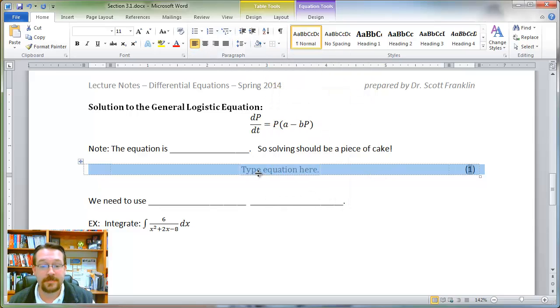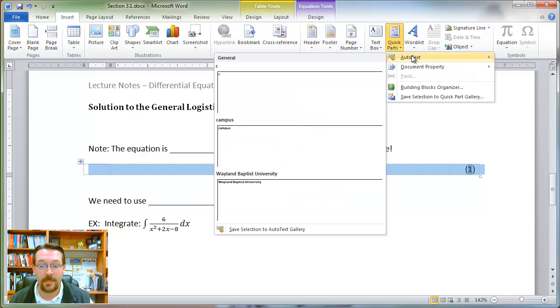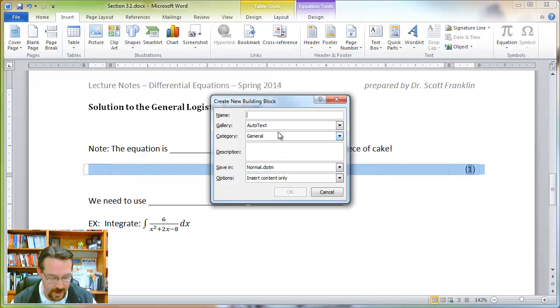Now I've got a basic text that I would like to insert multiple times in my document, so I would actually prefer to add this as a quick part auto text. This way I can repeat this process without having to go through it every single time by just creating an auto text selection in my auto text gallery. If I select Save Selection, I'll give this a name, INSEQ, and hit OK.